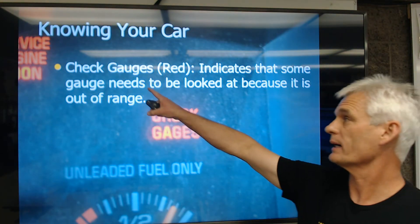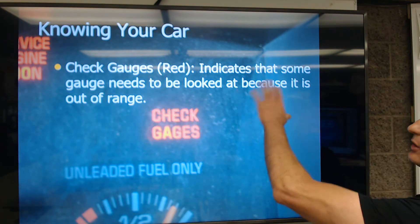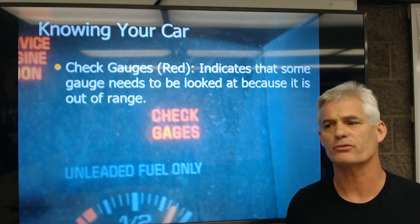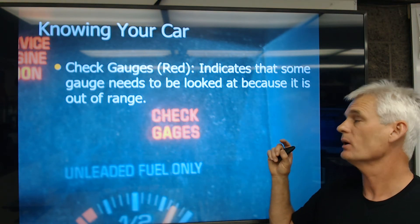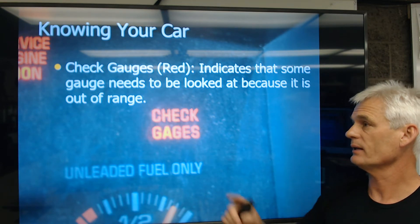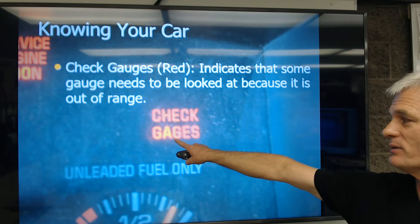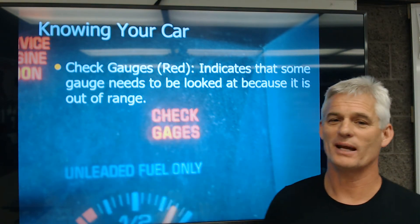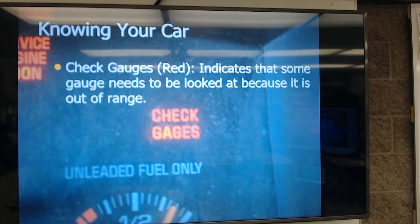Next, we have what we call a check gauges light, which is a red critical malfunction light. It indicates that some gauge on the dash needs to be looked at because it's out of range. Some cars, instead of having an oil pressure icon, will have an oil pressure gauge, or instead of a temperature icon, it'll have a temperature gauge. If any of those gauges go out of range, it'll turn this red check gauges sign on. They actually spell it G-A-G-E-S on this car, and it is supposed to be G-A-U-G-E-S. Not every car has a check gauges light, but typically we hope we have one if we've got a car that has gauges.